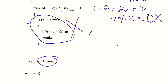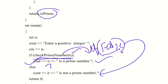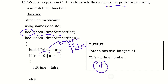If isPrime value is false, then the else branch executes and prints: N is not a prime number. This is also another university question. Thank you.